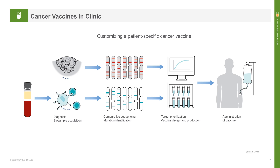Cancer is characterized by an accumulation of genetic alterations. Somatic mutations can generate cancer-specific neoepitopes that are recognized by autologous T cells as foreign and constitute ideal cancer vaccine targets. Every tumor has its own unique composition of mutations, with only a small fraction shared between patients. Technological advances in genomics, data science, and cancer immunotherapy now enable the rapid mapping of mutations within a genome, rational selection of vaccine targets, and on-demand production of a therapy customized to a patient's individual tumor.